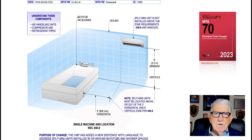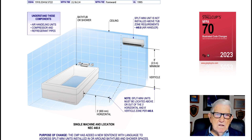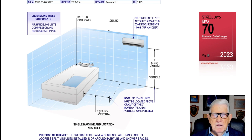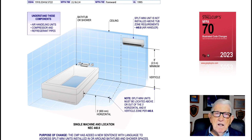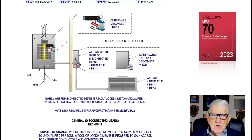Understanding these components, we're looking at air handling units, compressors, and refrigeration pipes that make up this unit, and these can be set anywhere within the dwelling. The note says that split mini units must be located above or out of the three-foot horizontal and eight-foot vertical zone rule. That's what this illustration is illustrating — where you can locate and install these split mini units in a bathroom area.